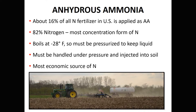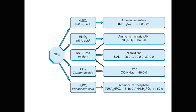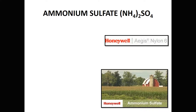The other reason anhydrous is popular in this area is because it's the most economical source — frankly, the cheapest source of nitrogen. Anhydrous ammonia, represented by NH3, is the basic building block by which we build most other nitrogen fertilizers, and it's utilized when combined with other products to make the various different fertilizers.